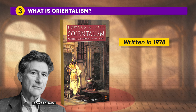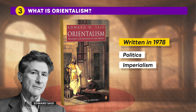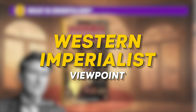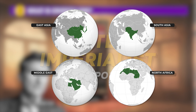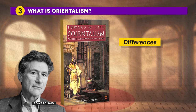Said argued that a lot of Western ideas about the East were shaped by politics and imperialism, where Westerners controlled or influenced these areas. As per the Western imperialist viewpoint, the East involves countries in East Asia, South Asia, the Middle East and North Africa. Orientalism is like a lens through which the West views and portrays the East, often emphasizing differences and exoticizing the people and cultures there. Said argued that this way of thinking is tied up with power dynamics and sometimes even serves the interests of the West.